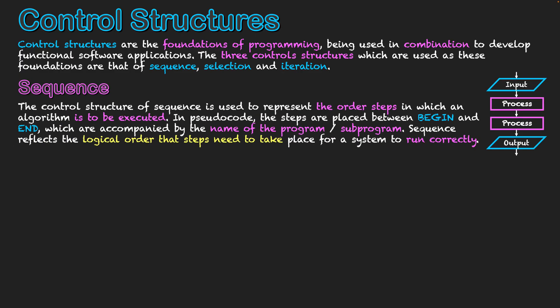So firstly, we're going to take a look at sequence. This control structure basically represents the order of steps which we're going to be using in our algorithm. Obviously, steps have to be in a specific order to make logical sense and execute the actual changes to data in an appropriate manner. In pseudocode, the steps are placed between the keywords of begin and end, which are accompanied by the name of the program or sub-program.